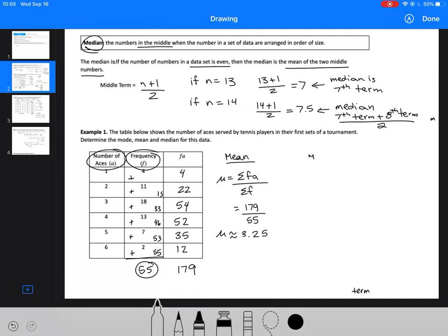The mode. We're now looking for the most common number of aces served by tennis players in their first sets of a tournament. So we're looking for the highest number in the second column, which is 18. That means my mode is 3.